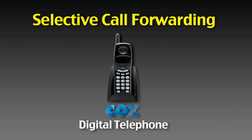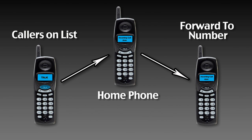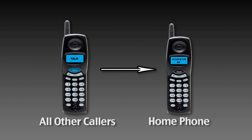The Selective Call Forwarding service allows you to decide which callers should follow you to another number. When the service is turned on, calls from numbers in your forward list will be rerouted to your forward-to number. All others will ring at your home phone as usual.